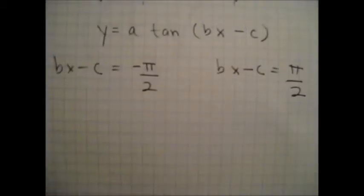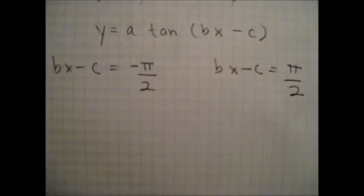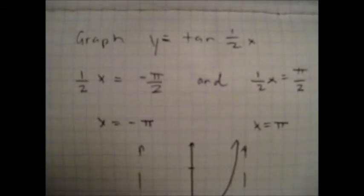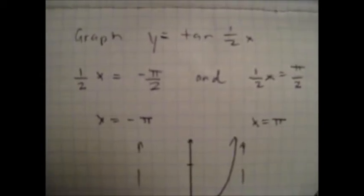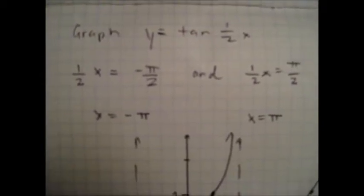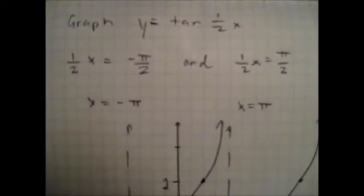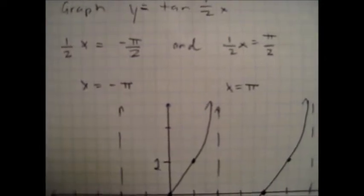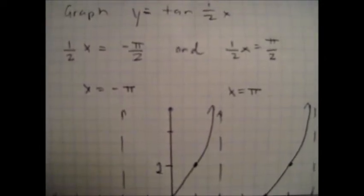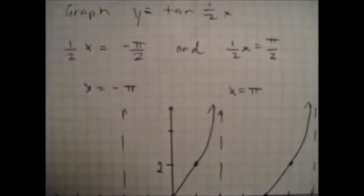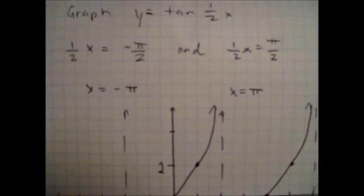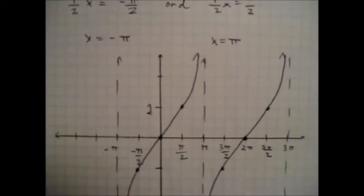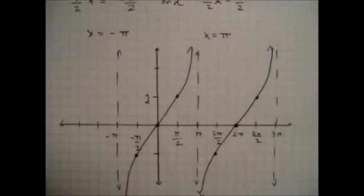To find the asymptotes, you need to use these equations. Here's an example: graph y equals tan(½x). The first thing you want to do is find the asymptotes, so we'll put it through the equation. We'll set them equal to negative pi over two and pi over two. When you do that, you'll get negative pi and pi.